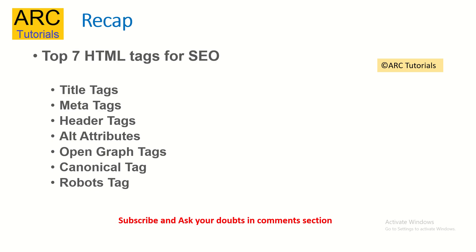Let's do a final quick recap of all 7 important HTML tags we just covered: provide the title tags, provide the meta tags, provide the header tags, add alt attributes to the images, add the open graph tags, add the canonical attribute to your links, and include the meta information about the robots tag.